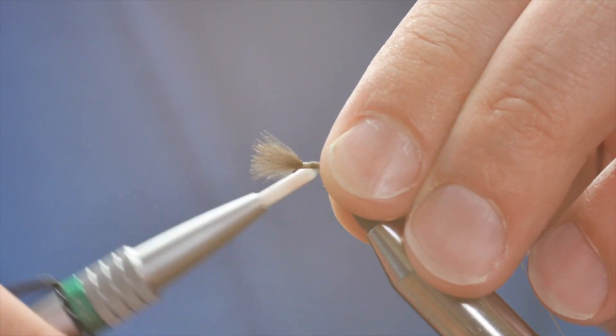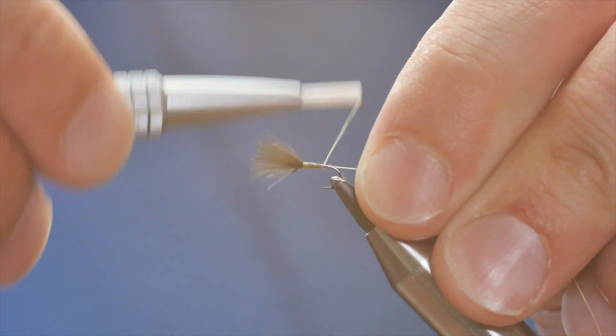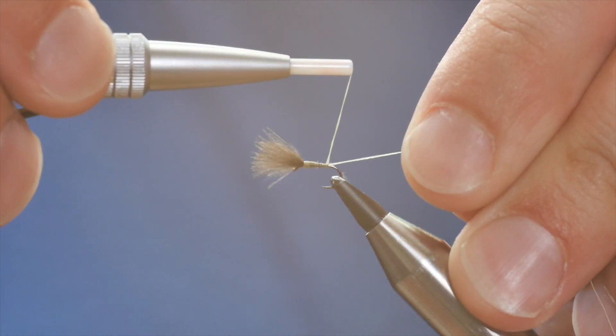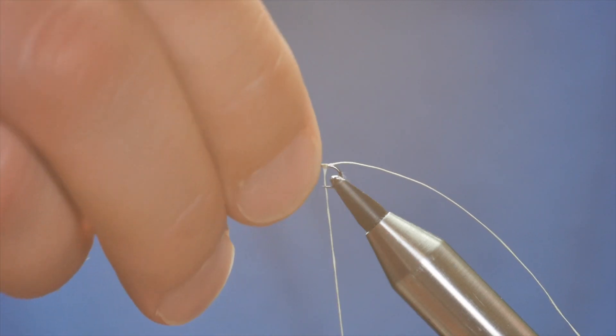If it wasn't for the size of the fly, this would be a really quick tie. You know, if you were tying this in a 16 or a 14 even, you would be doing it no problem at all. But because it is small, it can be a little bit fiddly and that's the challenge with this fly.